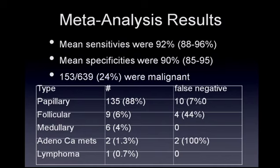For follicular cancers, there were 9 (6% of cancers) with a false negative rate of 44%. There were 6 medullary cancers with no false negatives, 2 adenocarcinoma metastases with no false negatives, and one case of lymphoma with no false negatives. Notably, there were no anaplastic cancers within any of these studies.